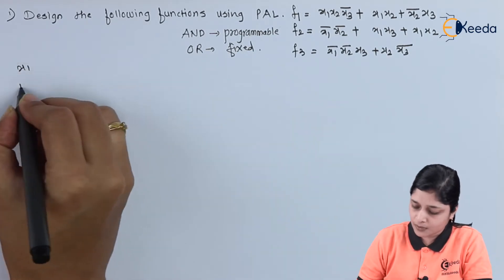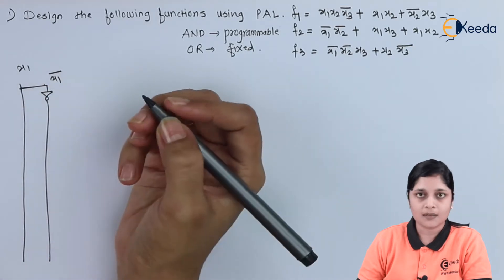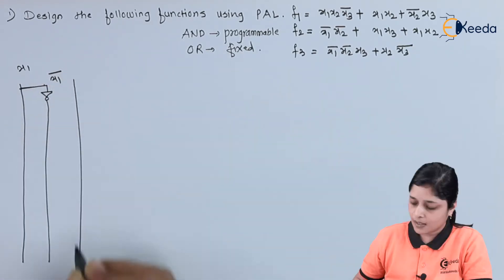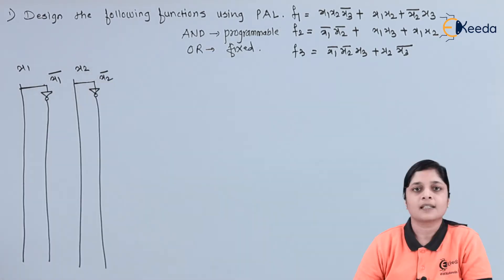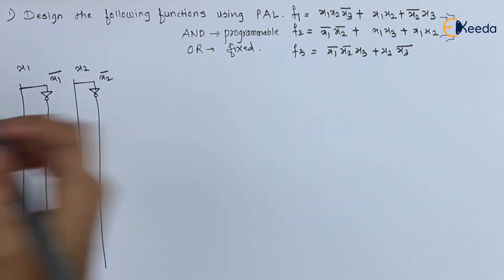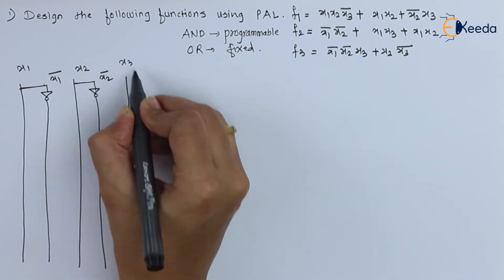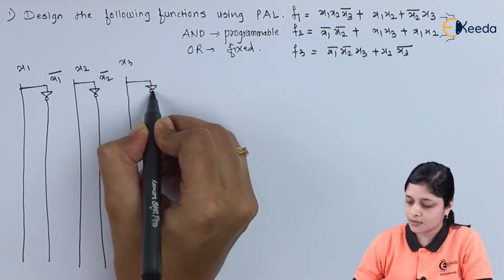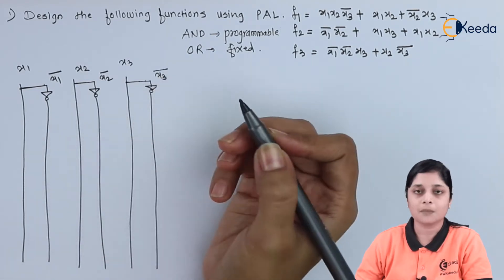This is your x1, this becomes your x1 bar. After that we have x2, this gives you x2 bar. Then we will draw here x3 and this becomes your x3 bar.